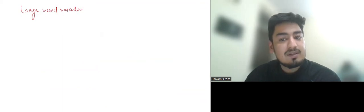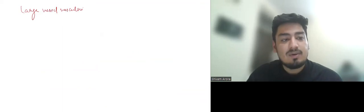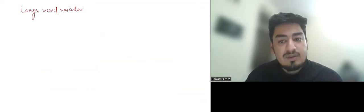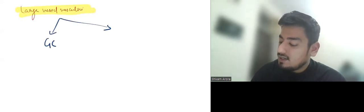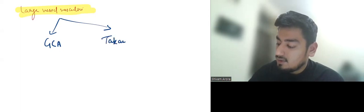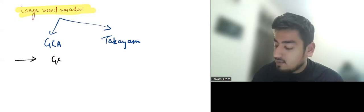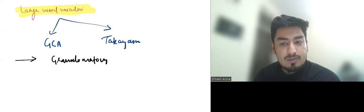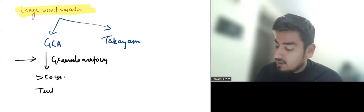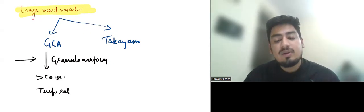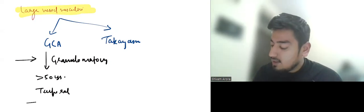Now let us discuss large vessel vasculitis. In large vessel vasculitis we have giant cell arteritis and Takayasu arteritis. Both are granulomatous. For GCA it majorly presents after the age of 50 years. Most common artery involved is temporal artery and most common symptom is headache or due to the involvement of the ophthalmic arteries there can be blurring of vision. Treatment is steroids.